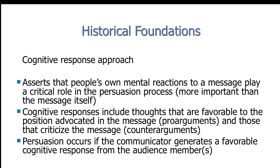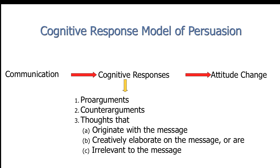Persuasion occurs if the communicator generates a favorable cognitive response from the audience members. In the cognitive response model of persuasion, we begin with communication. We have cognitive responses, which include pro-arguments, counter-arguments, and thoughts that originate with the message, creatively elaborate on the message, or are irrelevant to the message. These then lead to attitude change.